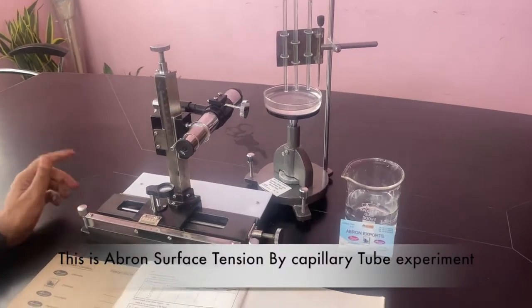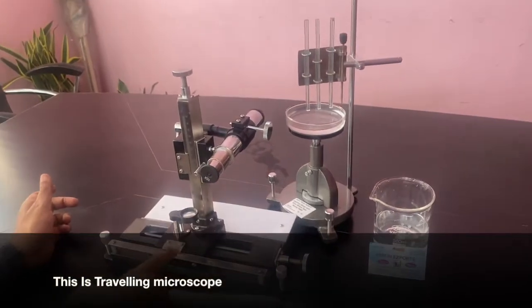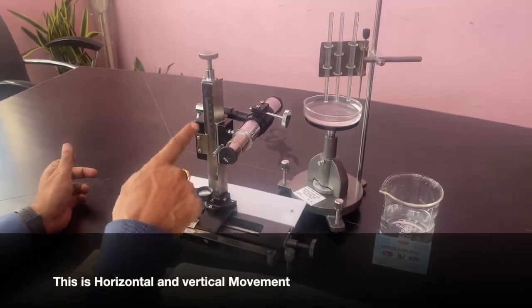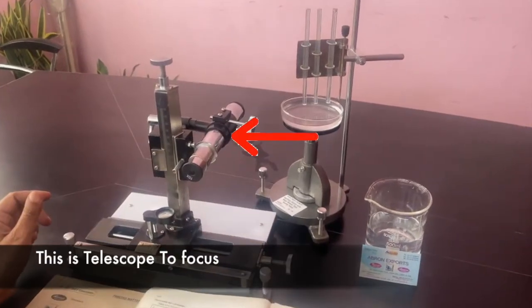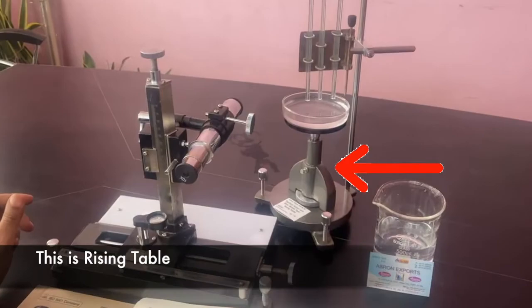This is a surface tension by capillary tube experiment and this is the traveling microscope. This shows horizontal and vertical movement. This is the telescope to focus. This is the rising table.